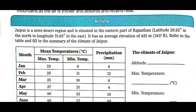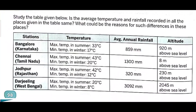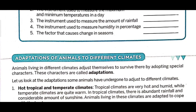For the activity, Jaipur is a semi-desert region situated in the eastern part of Rajasthan at latitude 26.92 degrees North and longitude 75.82 degrees East, with an average elevation of 431 meters. This activity will discuss adaptation of animals in different climates, which we will cover in the next class.